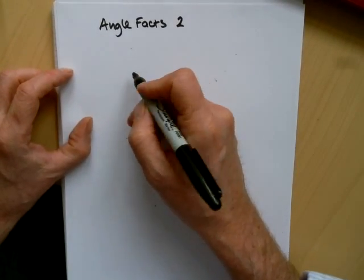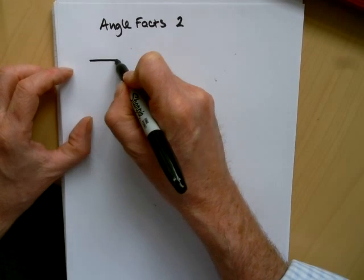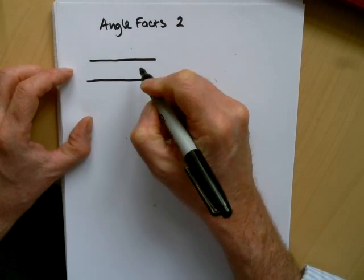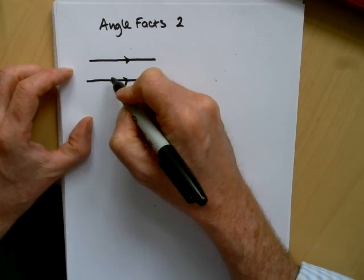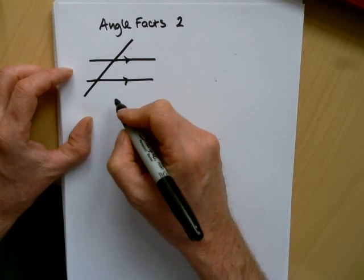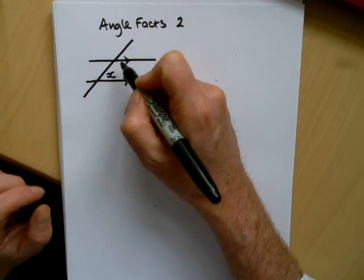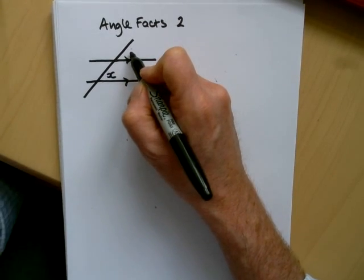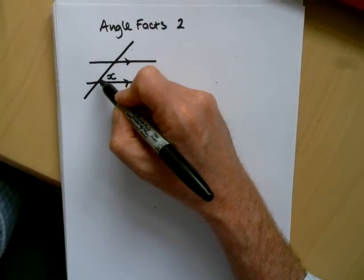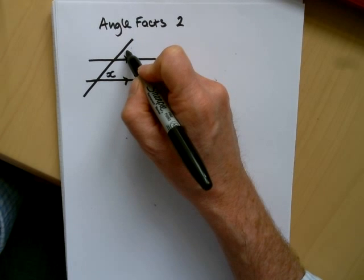In this second video on Angle Facts, Angle Facts 2, we're going to look at angles that are formed when a line crosses two parallel lines. If we start here, this angle here is x, and the angle up here is exactly the same — because they're parallel, the lines coming away from a diagonal line are at exactly the same angle.